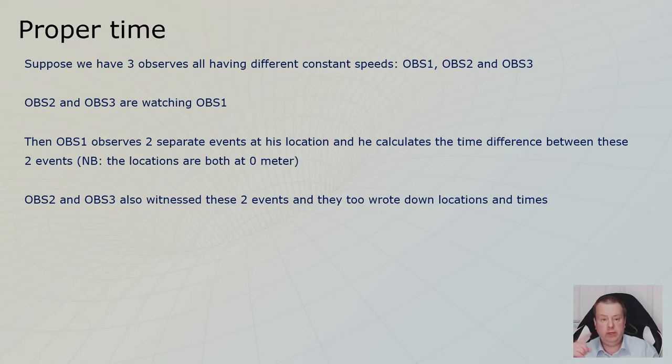Observer two and three also witnessed those two events. They will write down when they saw these events, at which locations they saw these locations. And then they all will disagree about locations and times. This is just the way special relativity is.